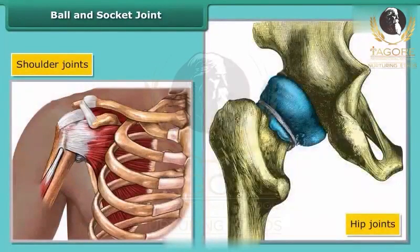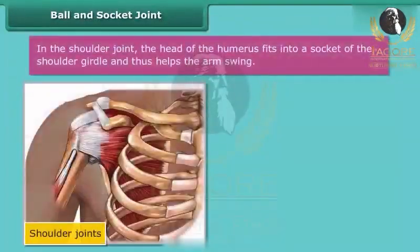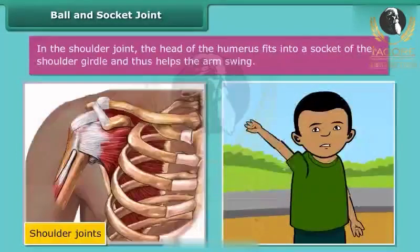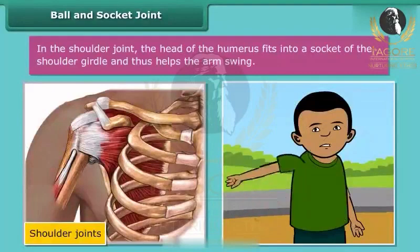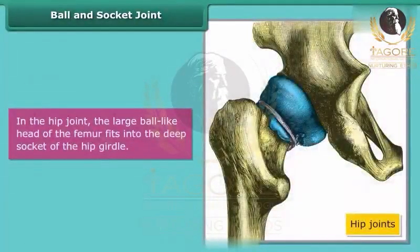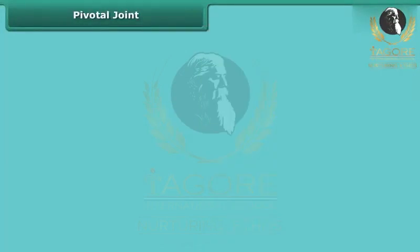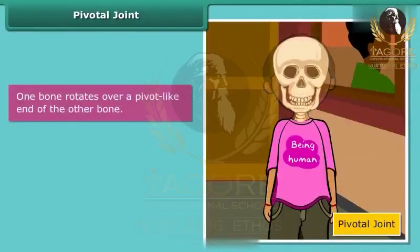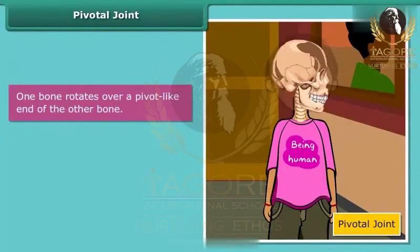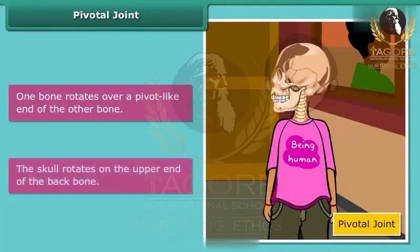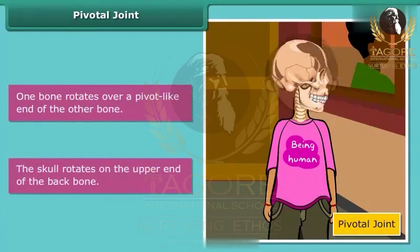Shoulder joints and hip joints are examples of ball and socket joints. In the shoulder joint, the head of the humerus fits into a socket of the shoulder girdle and helps in arm swing. In the hip joint, the large ball-like head of the femur fits into the deep socket of the hip girdle. In a pivotal joint, one bone rotates over a pivot-like end of the other bone — like the skull rotating on the upper end of the backbone.